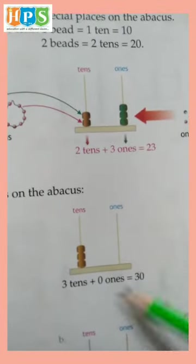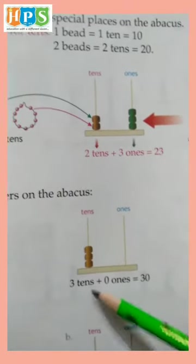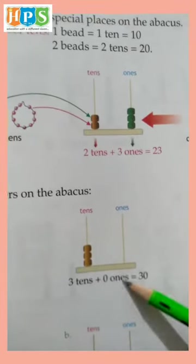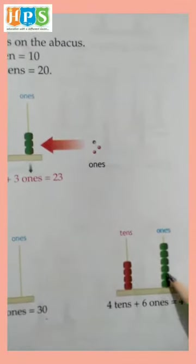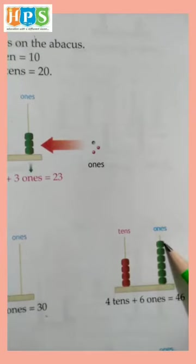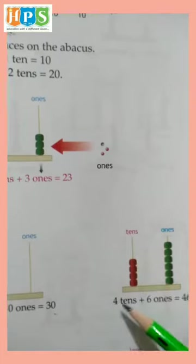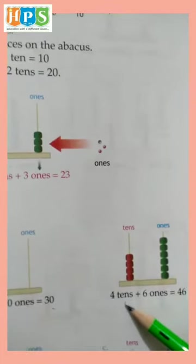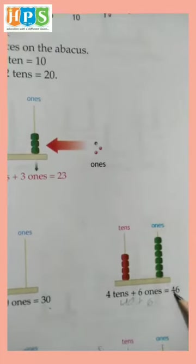Zero ones and one, two, three - three tens. So three tens plus zero ones equals thirty. One, two, three, four, five, six - six ones and one, two, three, four - four tens means forty. Forty plus six is equal to forty-six.